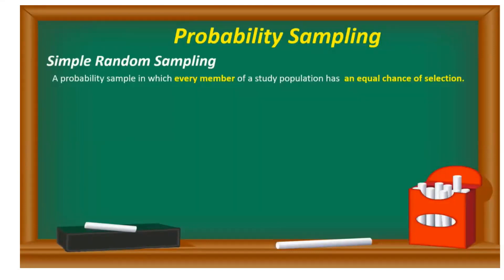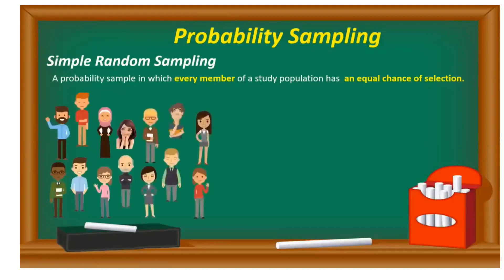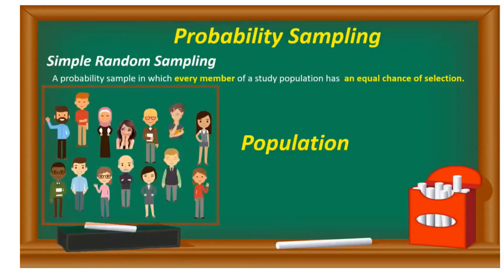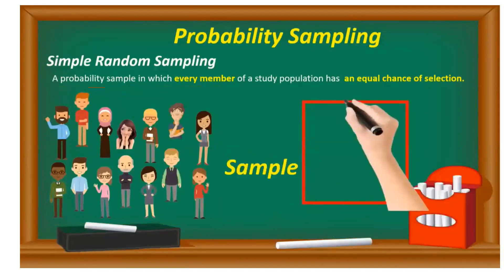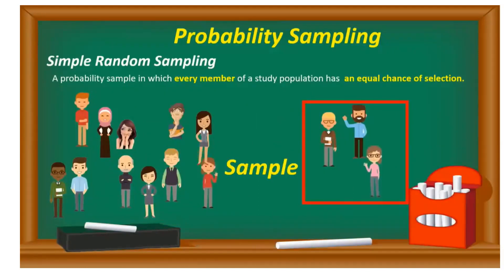This technique is also known as the method of chance. For example, if we have a population representing a broad category of people of different age, sex, nationality, and profession, and we apply simple random technique, we select a sample from this population based on randomness and by chance. The selected individuals are chosen based on randomness and by chance. The logic behind using this simple random technique is to remove bias in the selection process.